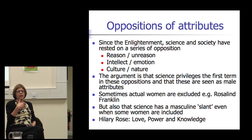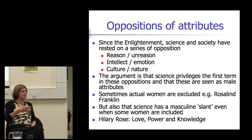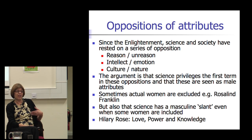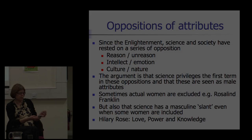Sometimes this means actual women are excluded from science — for example, Rosalind Franklin, who was co-discoverer with Crick and Watson of the structure of DNA, the double helix, but whose name didn't appear on any of the papers. But the argument also is that because science has this masculine set of attributes, the knowledge has a masculine slant even when some women are included. Hilary Rose has written a book called Love, Power and Knowledge — trying to insert something less masculinist into the debate.